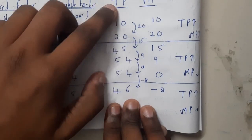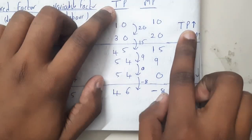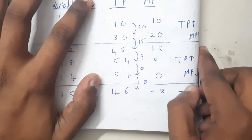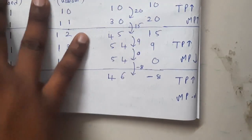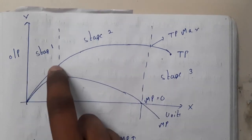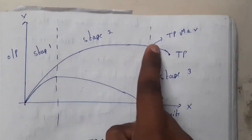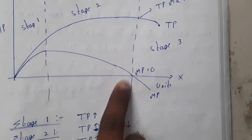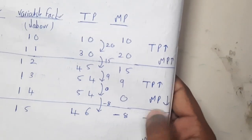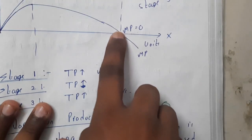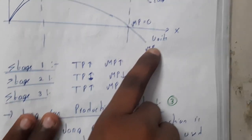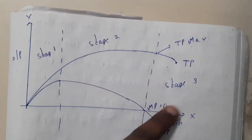Observing the table: total product is increasing throughout. In stage 1, MP is increasing. In stage 2, MP is decreasing down to 0 — TP is still increasing but at a decreasing rate. In stage 3, MP goes negative. To graph this: both TP and MP increase initially in stage 1; in stage 2 TP keeps increasing but MP falls to 0; in stage 3 MP goes negative.